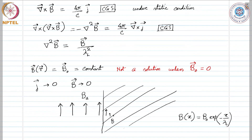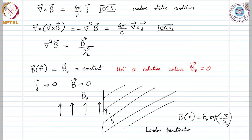In this example the magnetic field is assumed parallel to the boundary. Thus λ_L measures the depth of penetration of the magnetic field into the superconductor, and is known as the London penetration depth. Actual penetration depths are not described precisely by λ_L alone, as the London equation is known to be somewhat oversimplified.